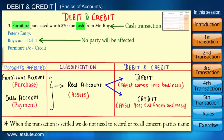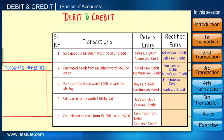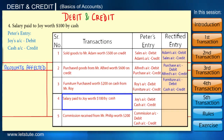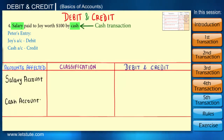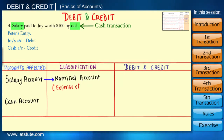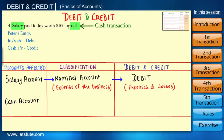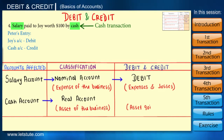Now let's see the next transaction. The two accounts affected are salary account and cash account. Salary is a nominal account as it's an expense of the business, so it will have a debit effect. Cash comes under the real account — it's an asset of the business, and as the asset is going out of the business, it will be credited.